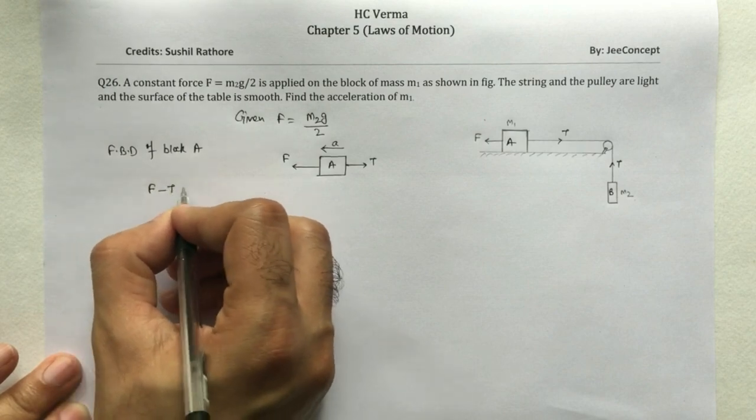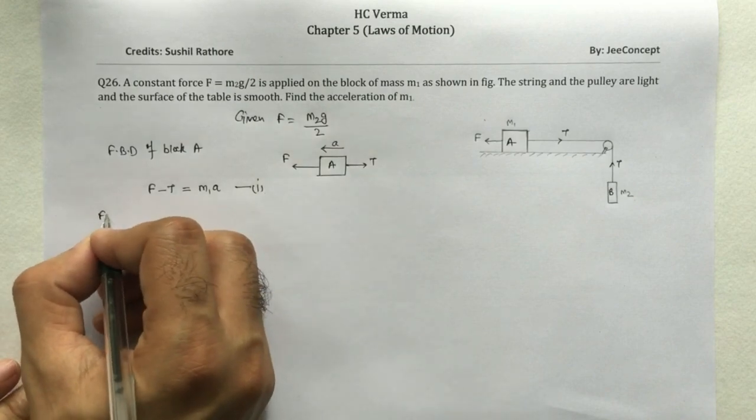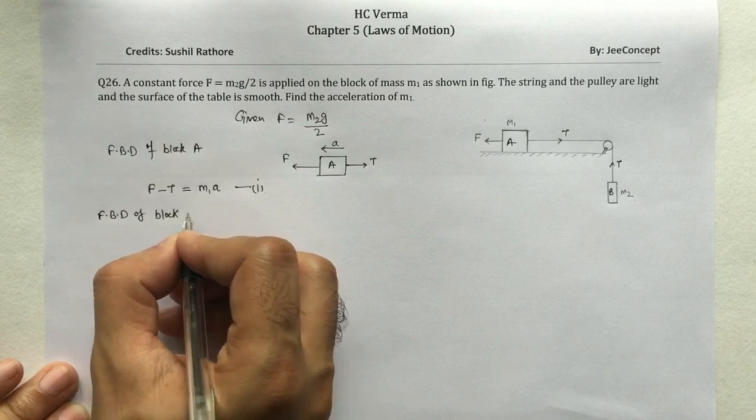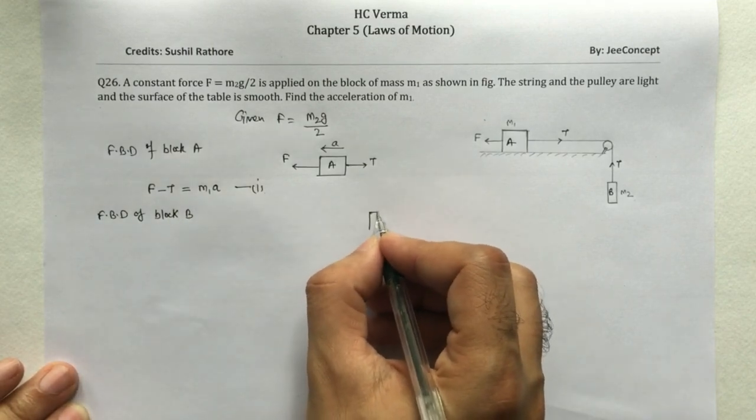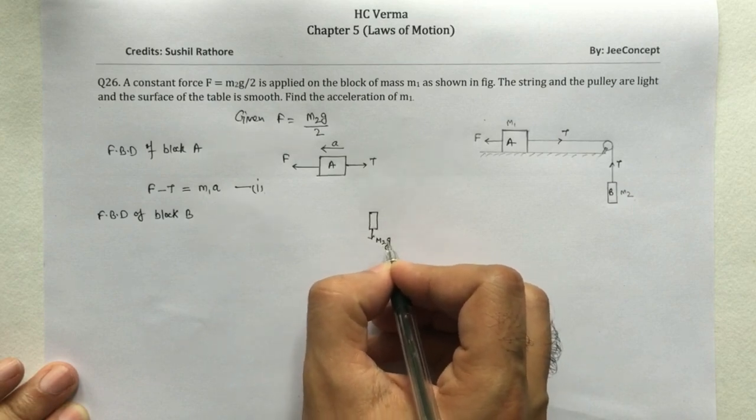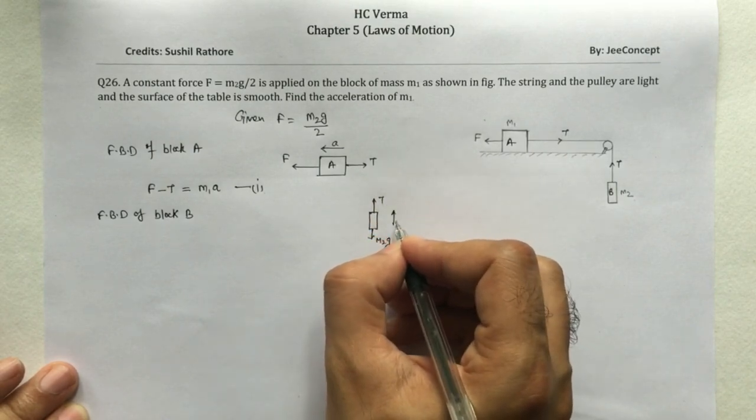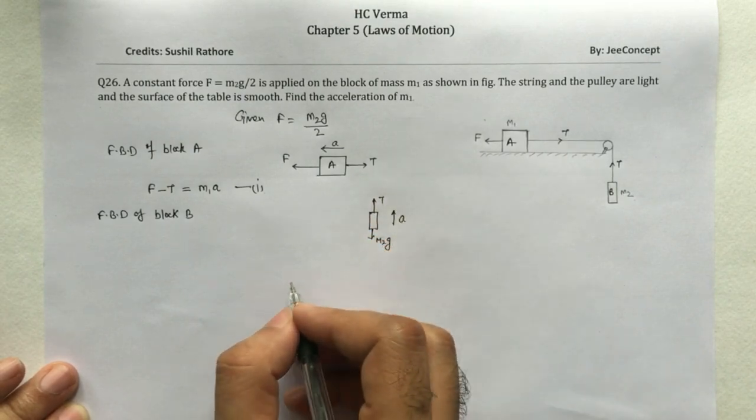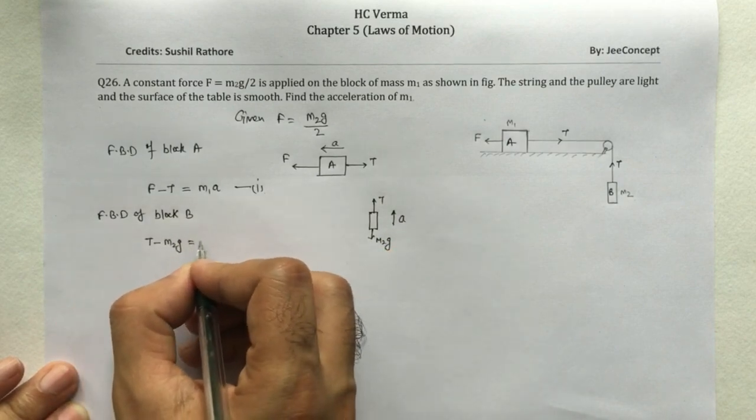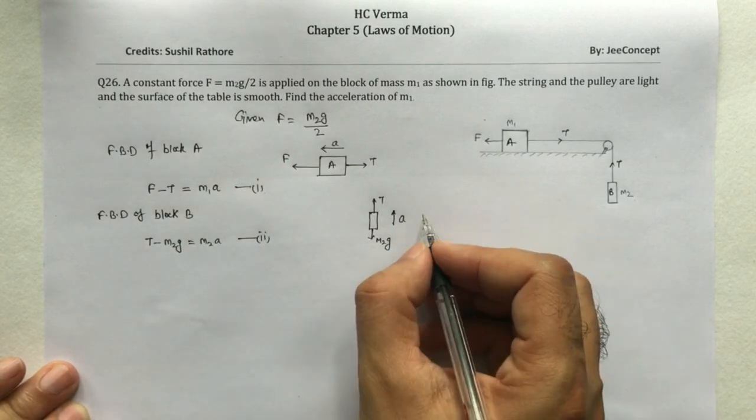Now FBD of block B: say this is the block having mass m2, so m2g force acting downward and the tension in the string is T. The system is moving with an acceleration a in upward direction, so that means T - m2g = m2*a. So this is equation number 2.